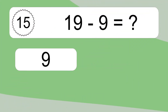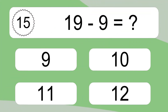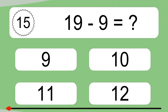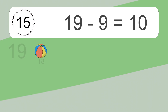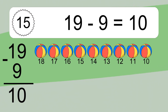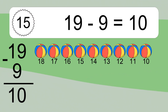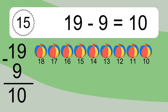19 minus 9 equals what? 19 minus 9 equals 10. Let's count it: 18, 17, 16, 15, 14, 13, 12, 11, 10.